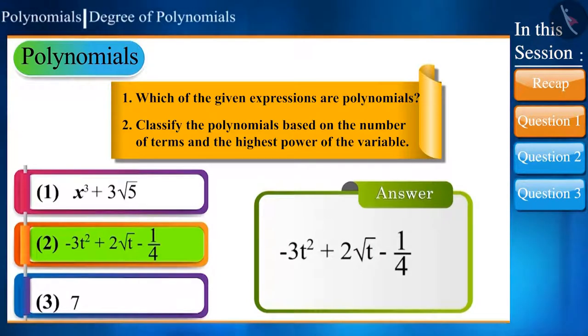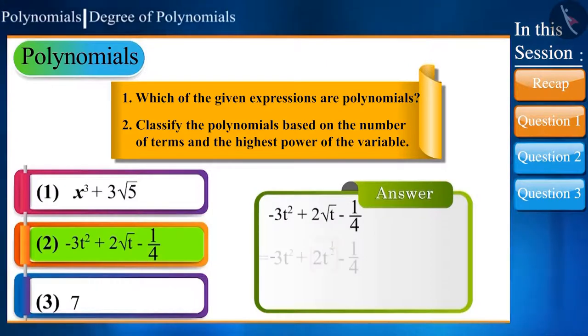In the second expression, -3t² + 2√t - 1/4, there is only one variable t whose highest power is 2. But if we see the second term √t, its power is not a whole number. Here the power of t is 1/2, which means this expression is not a polynomial.